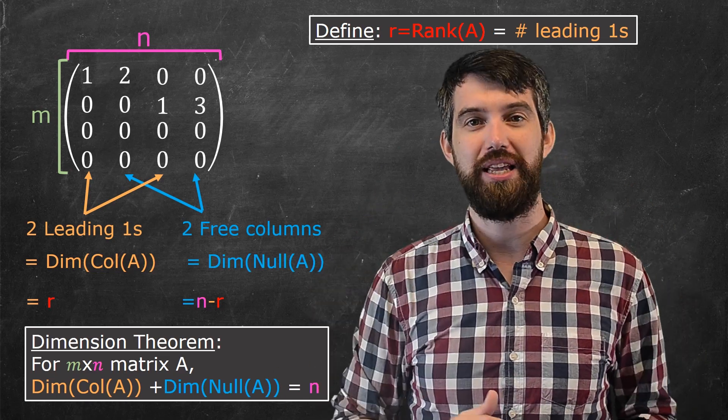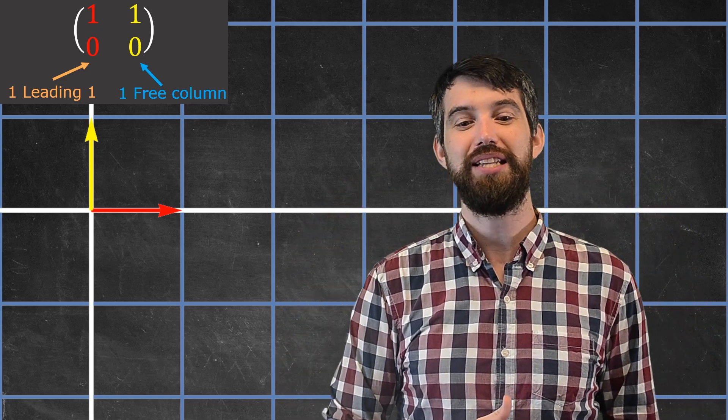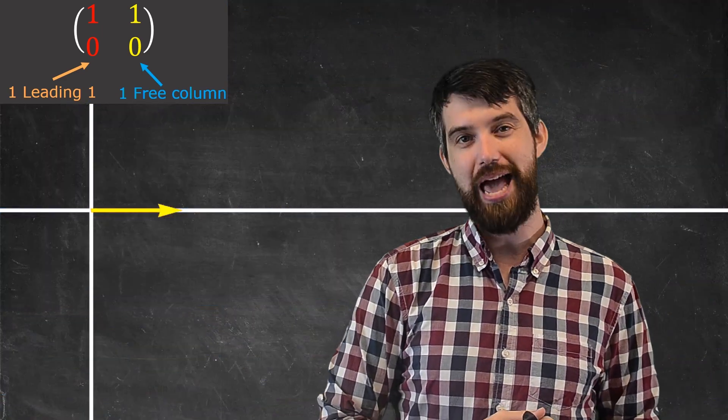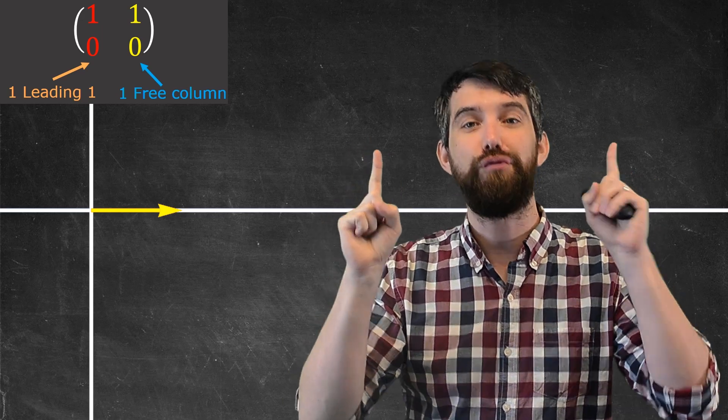We can see this visually as follows. Here I've got this matrix that we've seen several times before. It's the one that goes like this. It squishes everything down in this kind of funny way onto the x-axis. Now, this matrix has one column with a leading 1, and one free column.